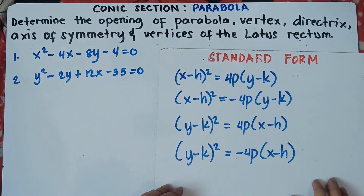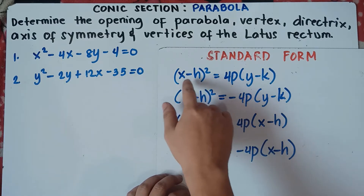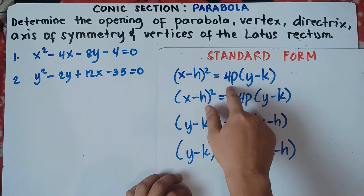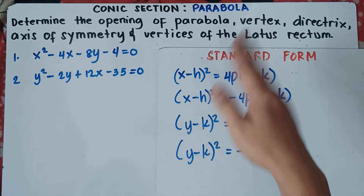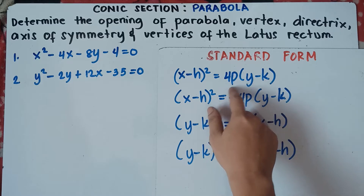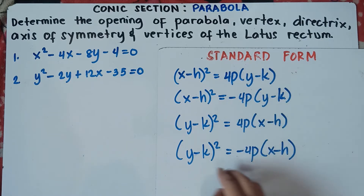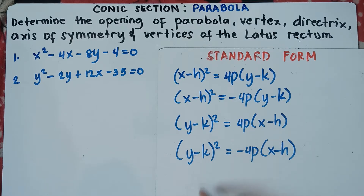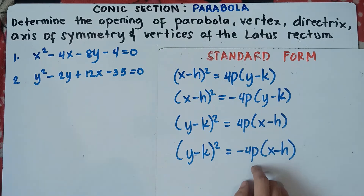This is the standard form of the parabola. If we have values of H and K which are not (0,0), that will be (x minus H) squared equals 4P times (y minus K). If you have x squared, the opening of the parabola should be upward or downward. Positive number before (y minus K) means the parabola opens upward; negative means it opens downward. If you have (y minus K) squared, the parabola opens right or left — positive before (x minus H) opens right, negative opens left.